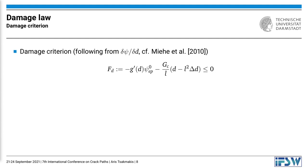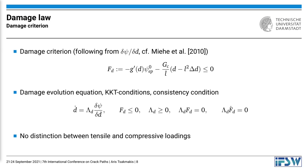Based on this driving force we can now introduce the damage criterion, which takes the form shown here with the undamaged parts of the elastic-plastic free energy density, the derivative of the degradation function with respect to the damage variable, as well as the Laplace operator on the right side. This damage criterion is the exact equivalent to the yield surface in classical plasticity theory. We have a damage evolution equation similar to the associated normality rule in plasticity, and we assume that the Kuhn-Tucker conditions and the consistency condition hold during loading and unloading.